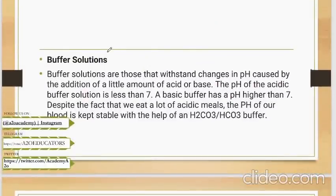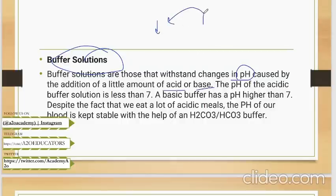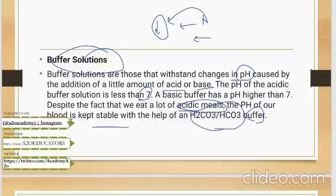Then you have buffer solutions. Now what is a buffer solution? Buffer solutions are those solutions which can withstand a pH caused by addition of a small acid or base. So for example, I have a buffer solution and I add an acid. So normally a solution should become acidic. So on a pH scale it will move towards left side. But if it's a buffer solution, the pH scale won't move. Basic buffer has a pH higher than 7. Acidic buffer has a pH less than 7. Despite the fact we eat a lot of acidic meals, pH of our blood is kept stable with the help of H2CO3, HCO3 buffer. So our blood is a buffer solution. We eat so much of acidic food, but it doesn't change the pH of our blood. That's because our blood is a H2CO3, HCO3 buffer which can withstand acids.